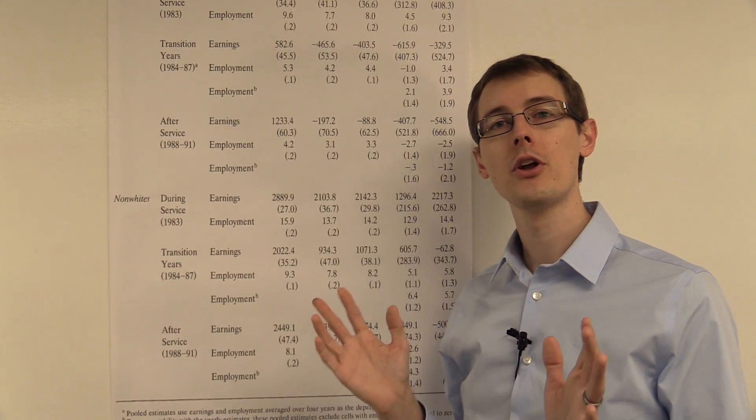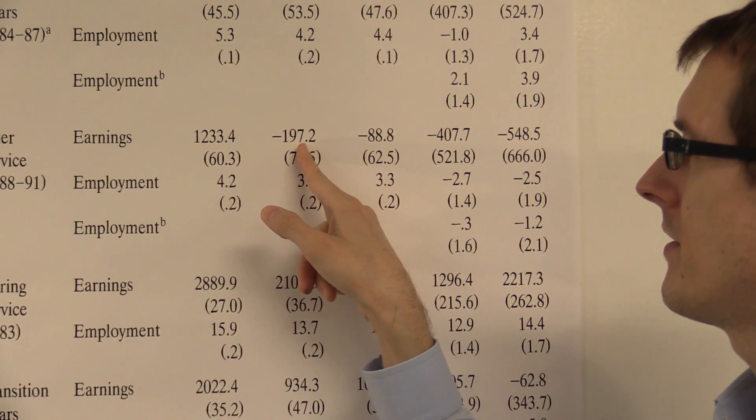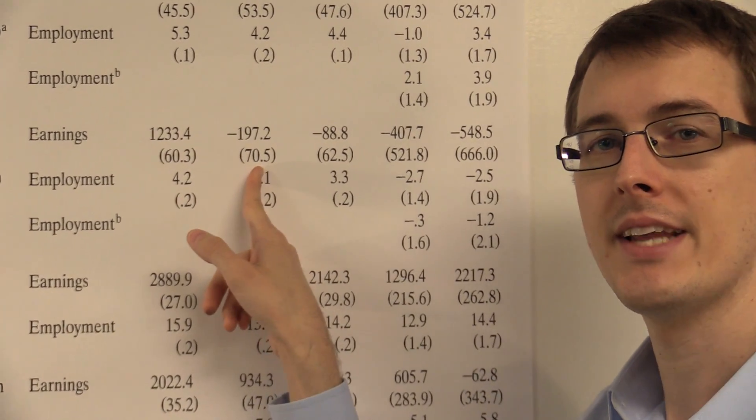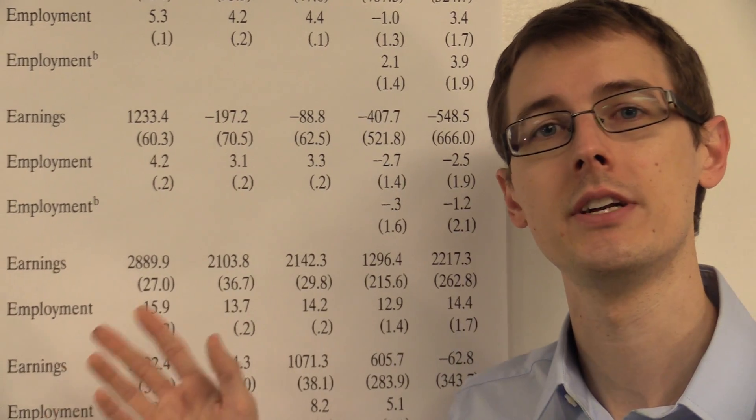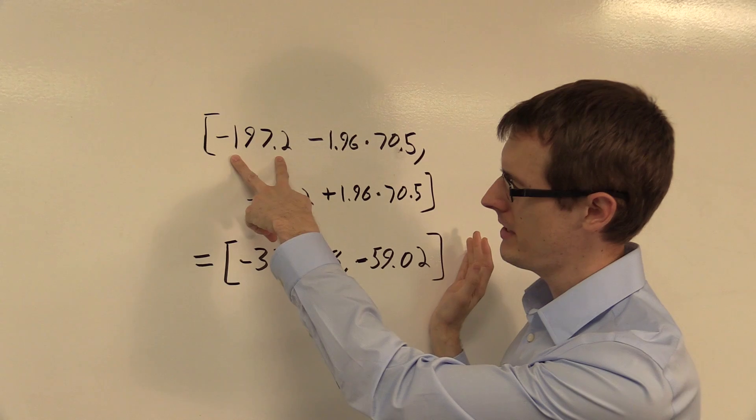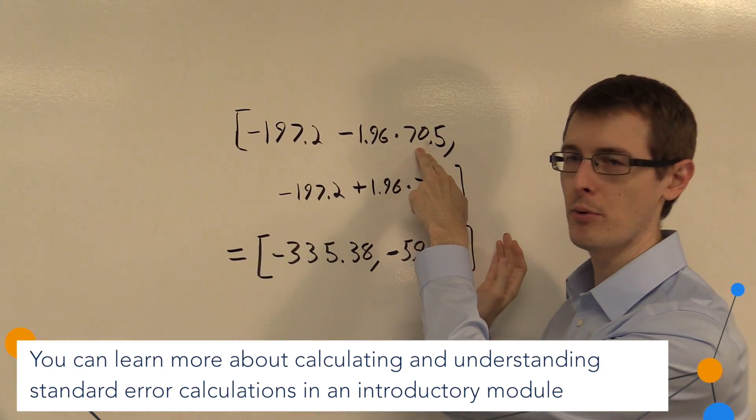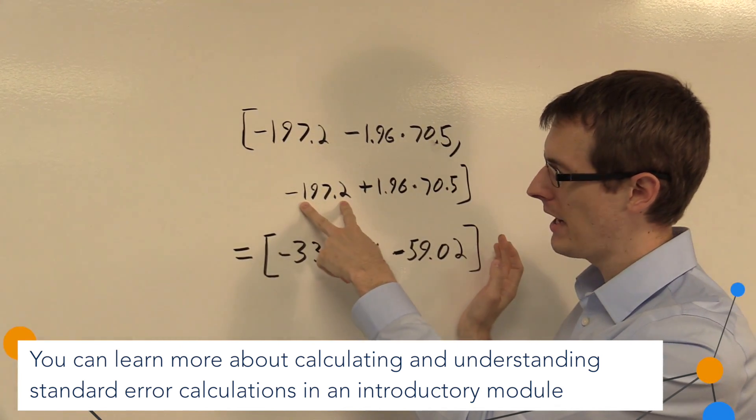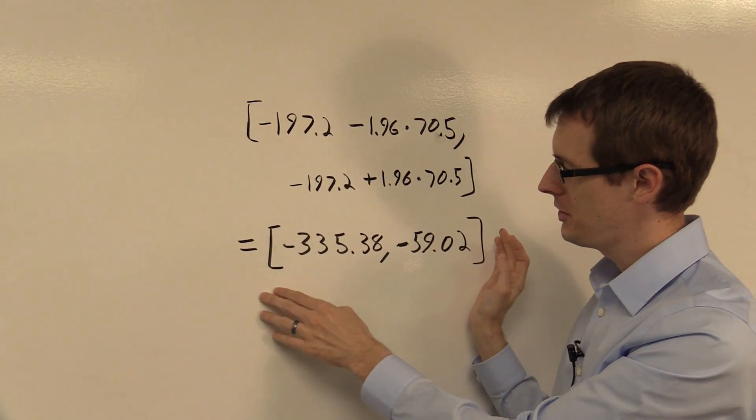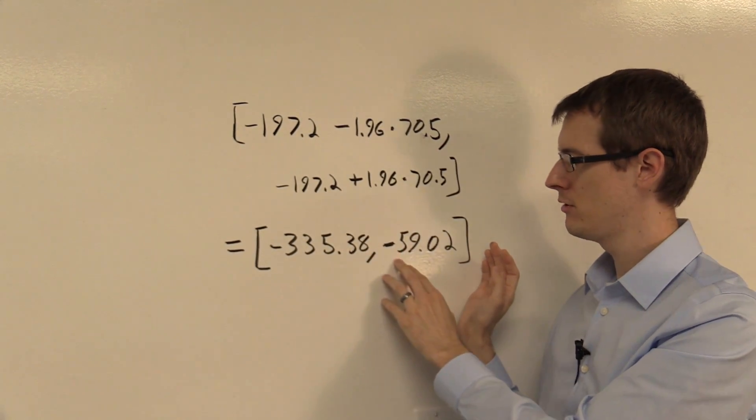So to do that, we're going to look at the confidence interval. So let's look at the confidence interval for just this number here, minus $197.20. So this here, 70.5, is the estimated standard error. So we can use that to construct a 95% confidence interval, which I've drawn right here. Take our point estimate, $197, minus 1.96 times the standard error, 70.5. Then this upper bound is the same thing, except we add 1.96 times 70.5. Doing the math, we get this confidence interval, minus $335 to minus $59.